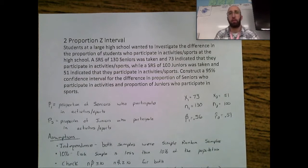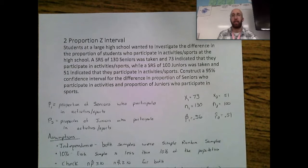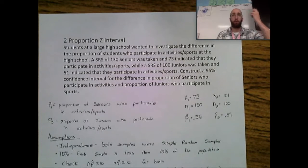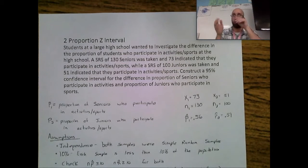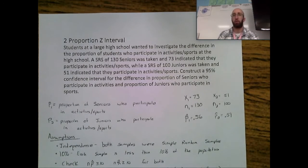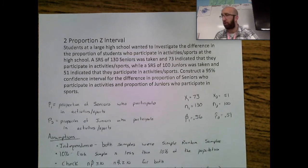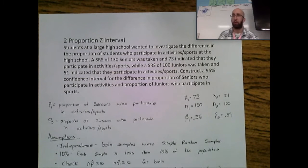In this video I'm going to go through an example of a two-proportion Z interval. The idea is we have one proportion and another proportion from two different populations. We're going to find the difference between these proportions and estimate it through a confidence interval. I've already worked through this problem to try and save some time, and I will explain all pieces as we go.